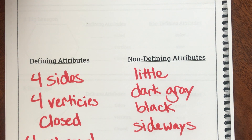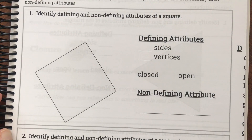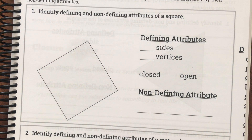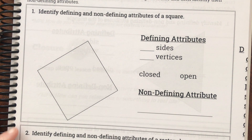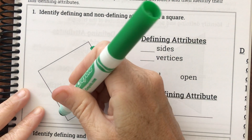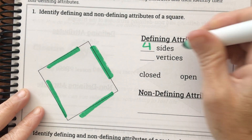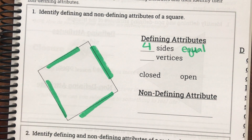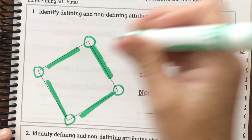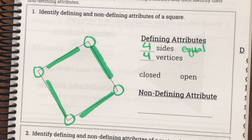Let's try some of these together on page 220 — grab your pencil and do a few with me. Here is our first shape. Identify defining and non-defining attributes of a square. For defining attributes, we could say it has one, two, three, four sides — and we could even say four equal sides. It has one, two, three, four vertices. Those are defining because they help us figure out what shape it is.